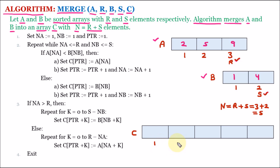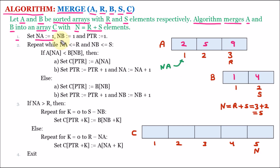The positions in c start from 1, 2, 3, 4, and 5 — this 5 comes from n, which equals the combined size of the two arrays being merged. The first line of the algorithm sets na equal to 1. na is a variable for traversing array a. Then nb is set to 1 — nb traverses array b. Then ptr is set to 1 — ptr traverses array c.